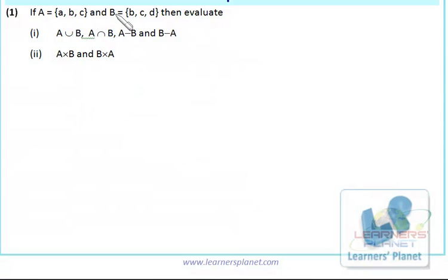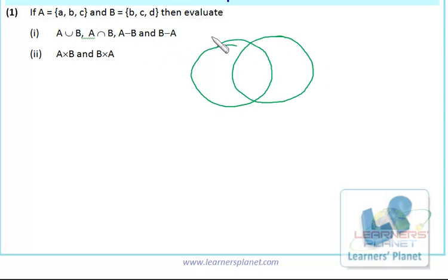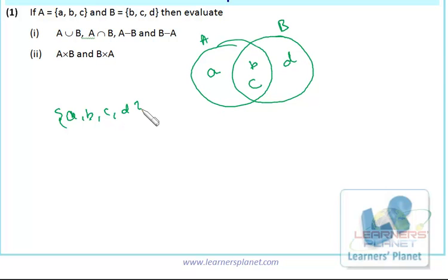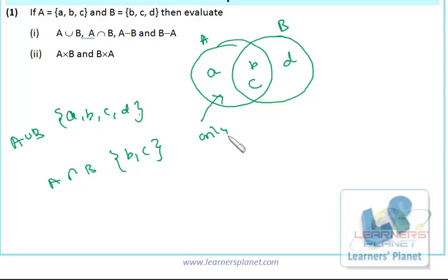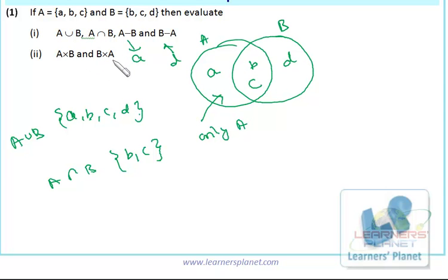For this example question — given sets A and B, evaluate A union B, A intersection B, A minus B, B minus A, A cross B, and B cross A. Draw two circles; common elements B and C go in the intersection, A on the left, D on the right. A union B is {A, B, C, D}; A intersection B is {B, C}; A minus B is {A}; B minus A is {D}. For A cross B: AB, AC, AD, BB, BC, BD, CB, CC, CD. For B cross A, reverse each pair similarly.